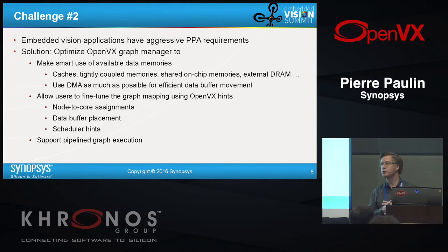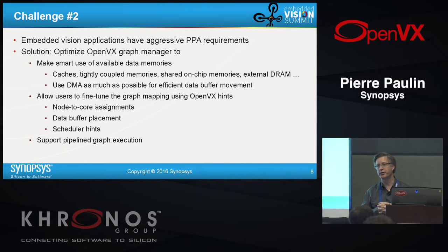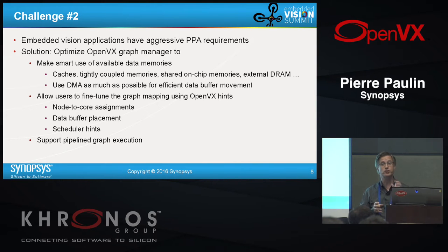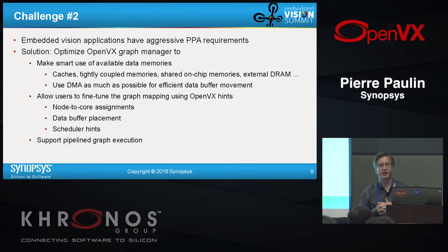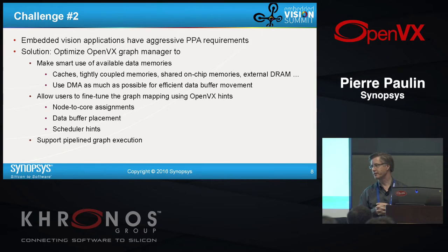Second challenge: with a couple of millimeters square and 100 milliwatts, we've had to deeply optimize the runtime and graph manager to make use of available data memory. Our architecture has a combination of closely coupled memories attached to each processor core, a multi-bank shared memory with low-latency access and full arbitration, L1 coherent caches for parts of the application that require them, and of course external memory. All data movement can be either through cache coherency or through DMA. There are many ways to move data and synchronize on this heterogeneous multi-core system, and it's extremely important that the OpenVX runtime factors all of this in.